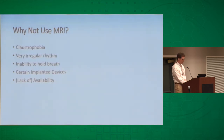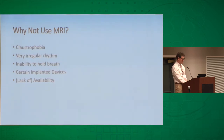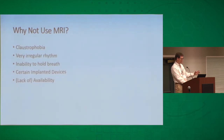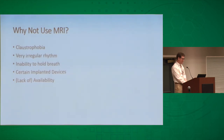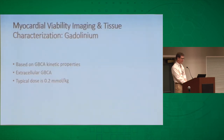There are some reasons you might not want to use MRI. Very claustrophobic patients can be a problem, though this is becoming less of an issue as scanners get bigger. Patients with very irregular rhythms are still a problem because we gate images to the ECG and take multiple heartbeats to reconstruct an image. We typically do these with breath-holding, and patients need to hold their breath for 6 to 14 seconds. Certain types of implanted devices can be a problem, and availability, while not bad, is not necessarily widespread.